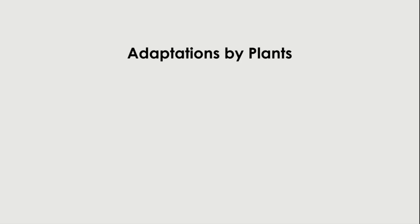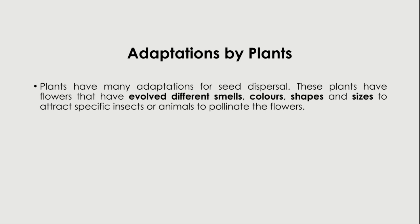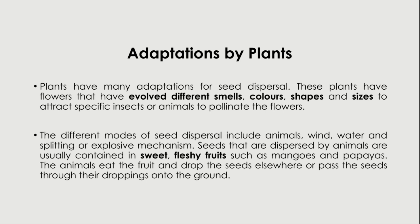Plants have many adaptations for seed dispersal. These plants have flowers that have evolved with different smells, colors, shapes, and sizes in the way they disperse, to attract specific insects or animals to pollinate the flowers. The different modes of seed dispersal include animals, wind, water, and splitting or explosive mechanism.